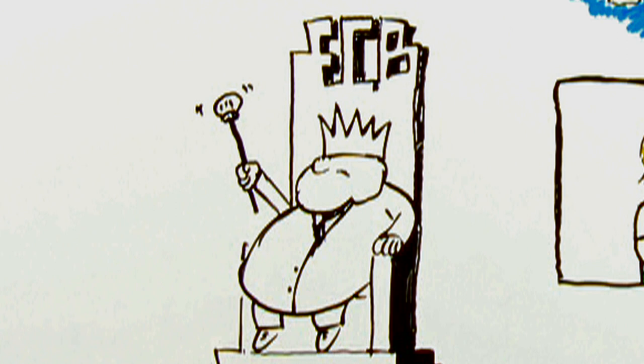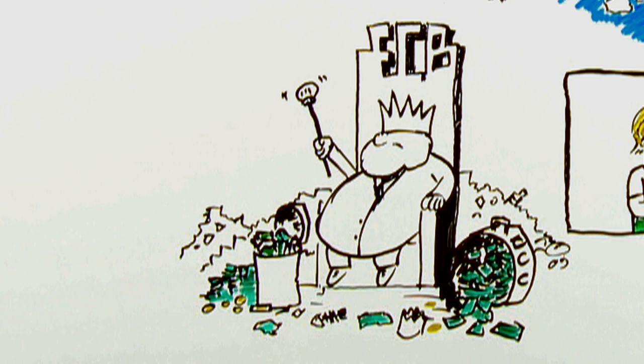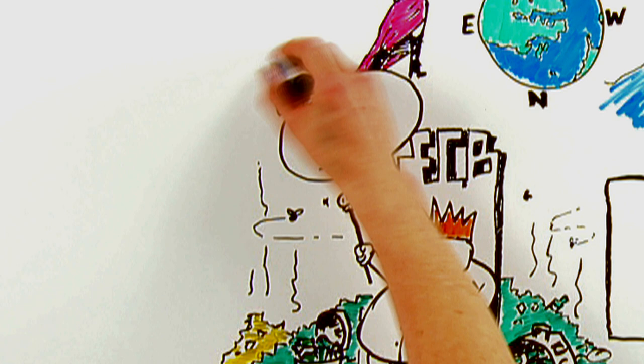The ECB is now presiding over a massive cash-for-trash scheme, whereby the bust European banks give the central bank trash as collateral. And in return for this trash, the ECB gives them real cash. And real cash at 1% for three years. This is the banking equivalent of turning water into wine.